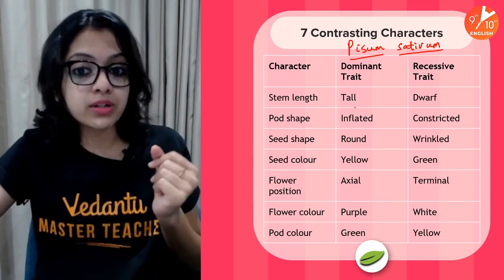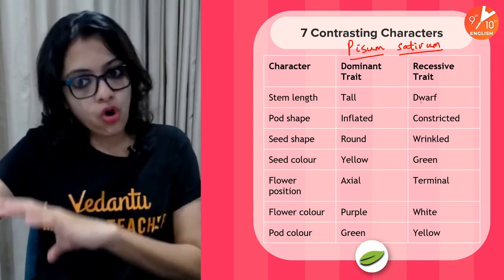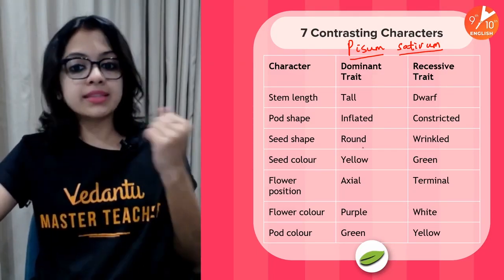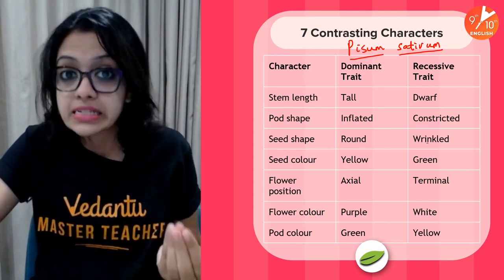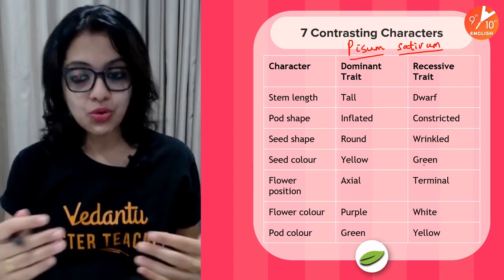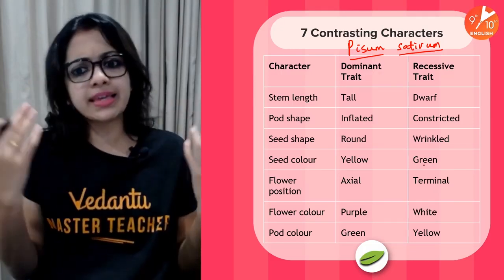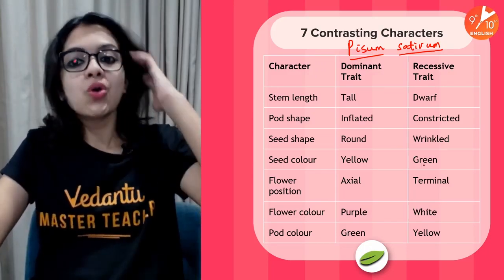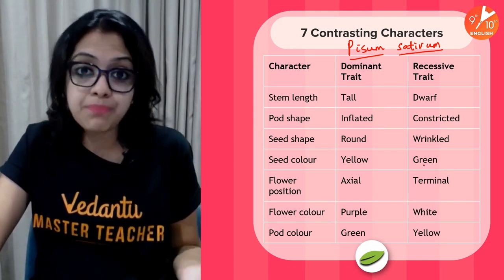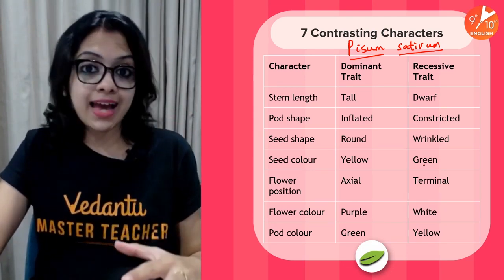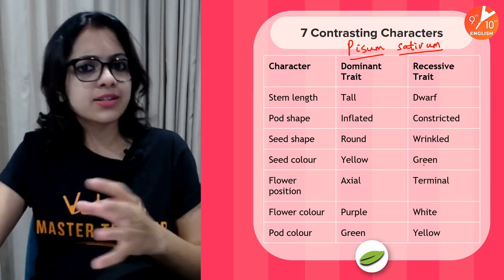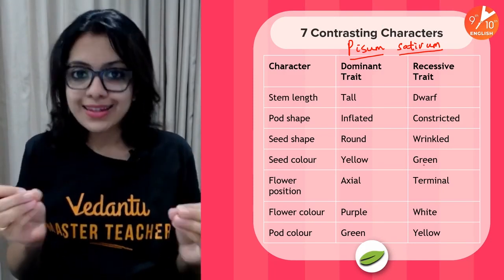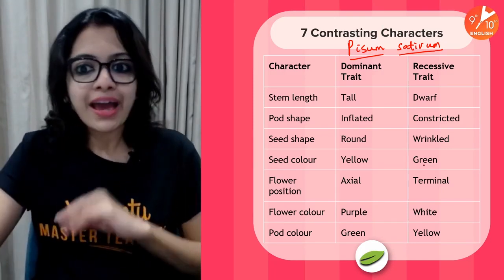Mendel noticed that pea plants could either be tall or dwarf, have an inflated or constricted seed pod, round or wrinkled seeds, and so on. He was very curious to know what decided this, because back then chromosomes hadn't been discovered. Mendel went on to study generations and generations of pea plants — in his 9 or 10 years of experiments, he had grown approximately 29,000 pea plants.